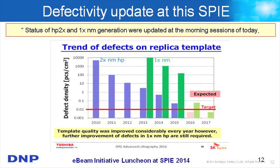There is an update on the half-pitch 2x status and the 1x generation template defect data. For the 2x nanometer half-pitch, development started in 2010 with thousands of defects per square centimeter, but we now achieve less than 0.1 defects per square centimeter. For the 1x node, development started about two to three years ago, and today we still have more than 100 defects per square centimeter due to very small features. Our target is less than 0.1 next year and less than 0.01 two years from now.